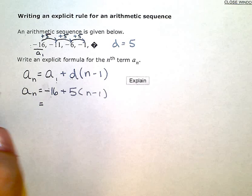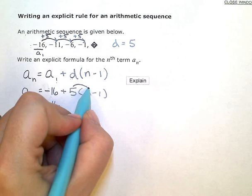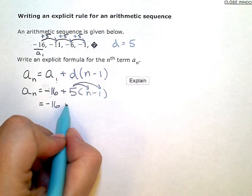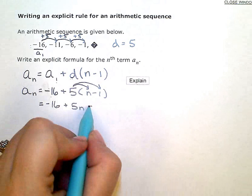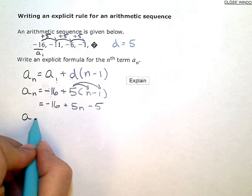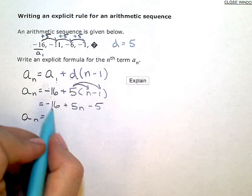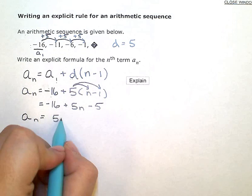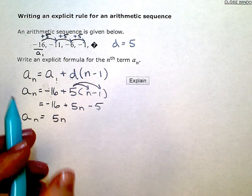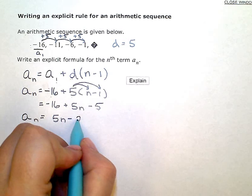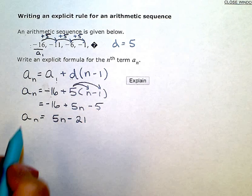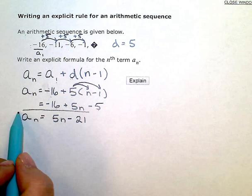So I have negative 16. I'm going to distribute here. So 5 times n is 5n. 5 times negative 1 is negative 5. So the explicit formula for this sequence is going to be 5n, and then combining like terms here with the negative 16 and the negative 5, that will give me negative 21. So a sub n equals 5n minus 21. And that is my formula.